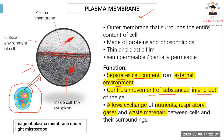The function of the plasma membrane is to separate the cell content from the external environment, control the movement of substances in and out of the cell, and very importantly, it also allows the exchange of nutrients, respiratory gases, and waste materials between cells.